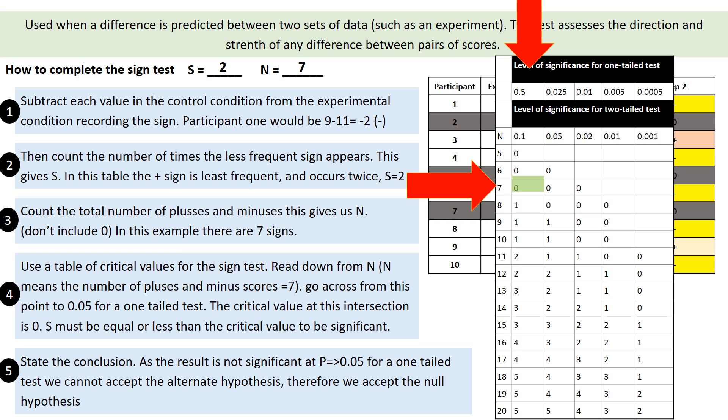So state the conclusion: as a result, it's not significant at p less than 0.05, a one-tailed test. We just can't accept the hypothesis or the alternate hypothesis, so we're going to have to accept the null hypothesis. And that's it. That's how you do a sign test from start to finish. You might only be expected to do a small amount or work out what it means, but honestly, that's all there is to it. Best of luck if you get that question.